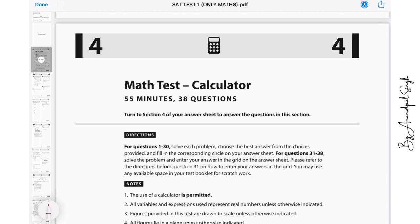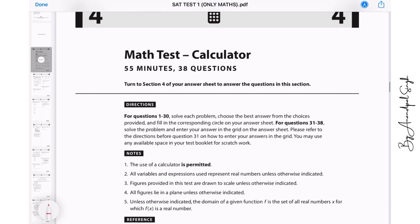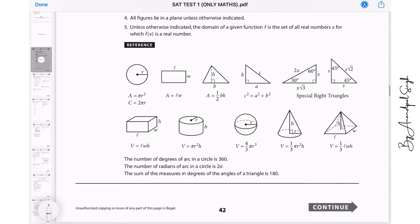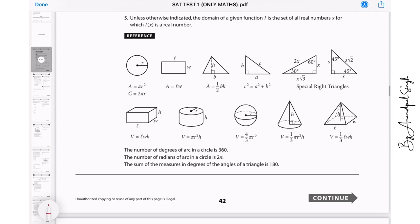So here we have the calculator section on the screen. Math test with calculator, you have 55 minutes and you have 38 questions to do. The information for reference which is given over here is about the area of circle, rectangle, triangle, Pythagoras theorem, then special right triangles.